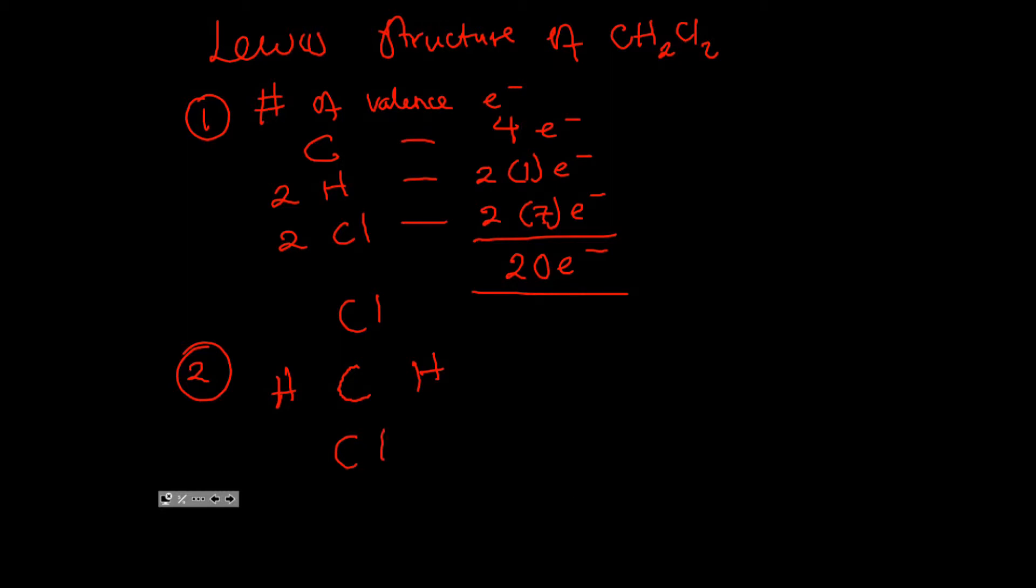And then try to form a bond by putting lone pair electrons in between. So far you've accounted for eight electrons out of the 20 electrons. You've used eight electrons, so you're remaining with 12.